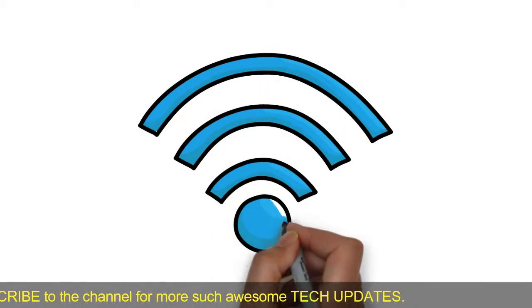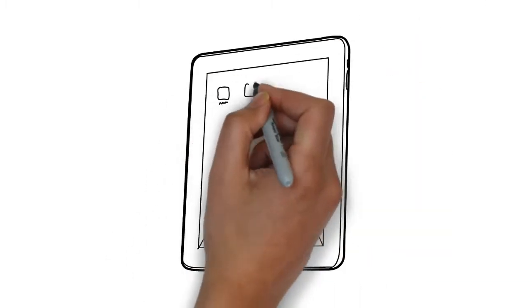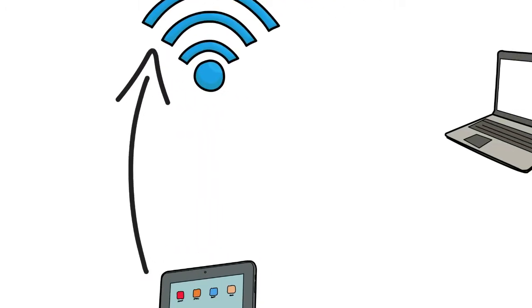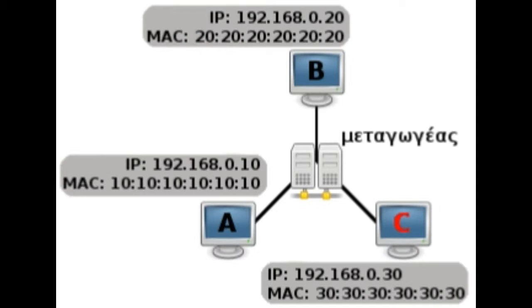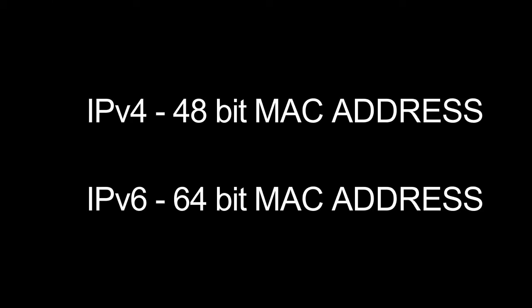MAC addresses are used by devices on the same network to communicate among themselves. For example, a mobile device sends a request for a web page to the router's MAC address, and the router, after fetching that web page, sends the response back to the correct mobile device using the same MAC address from which the request originated. If there was no such system, you might request a page and it would open up on your dad's device.